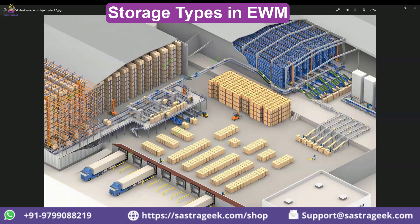There is a conveyor here, and over here racking is also there. That is MFS racking. You can see conveyors here as well, and you can see the outbound staging area and outbound door source. So how do you map this warehouse in a real-time environment? How are you going to map it in an EWM terminal? Now we are going to come to the EWM terminal.